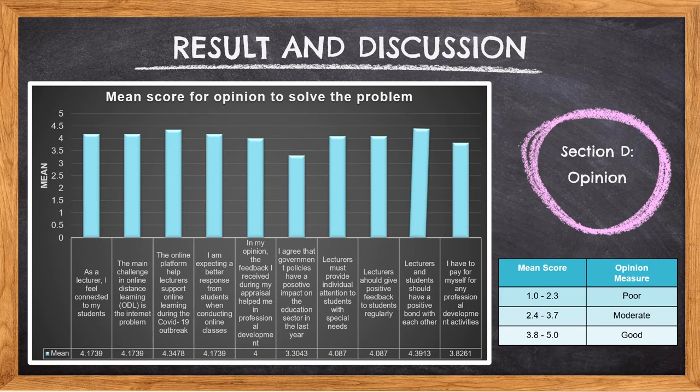Based on the graph the highest mean score is 4.3913 which states that lecturers and students should have a positive bond with each other. This finding indicates that the relationship between lecturers and students is important to ensure the learning process can go smoothly. Next, the second highest opinion of lecturers to solve the problems is the online platform helps lecturers support online learning during the COVID-19 outbreak. Based on the results it shows the lecturers believe that online platforms help them in the learning process and it was the easiest way to keep in touch with their students. Then, the lowest mean score for the opinion of lecturers to solve the issues is 3.3043 which is government policies have a positive impact on the education sector and it was under moderate opinion to solve the issues faced by lecturers.